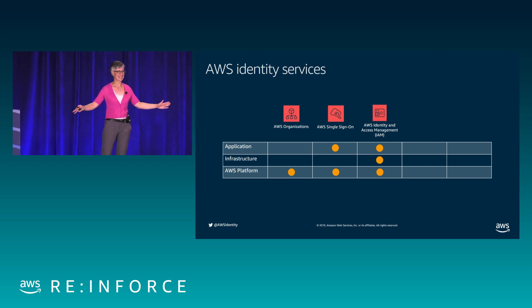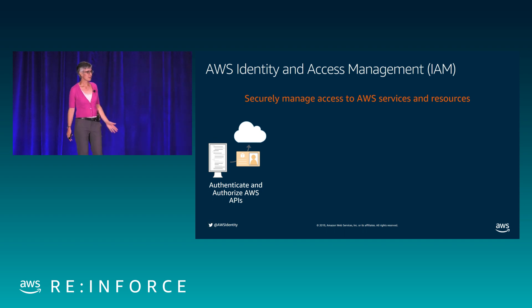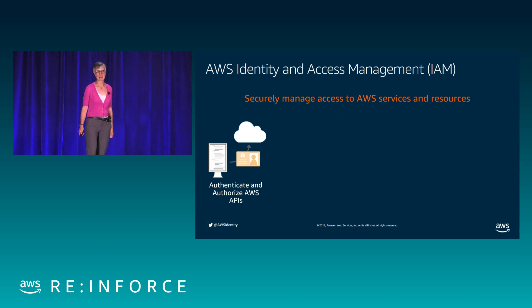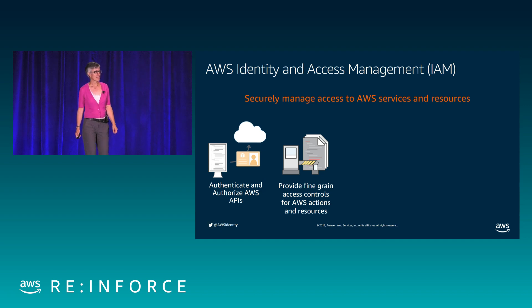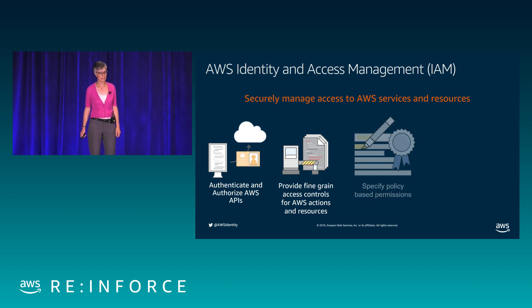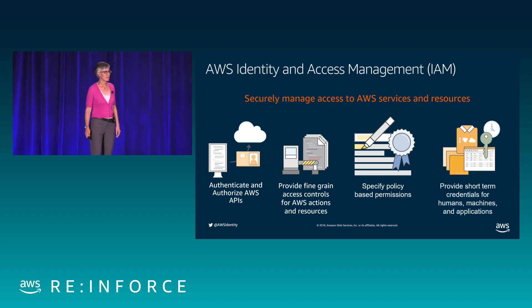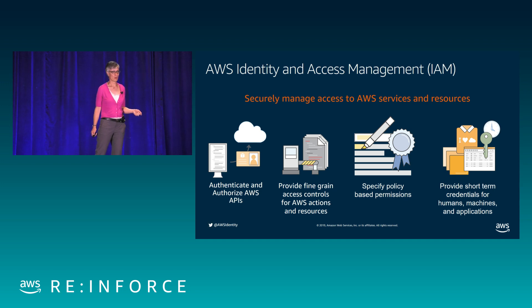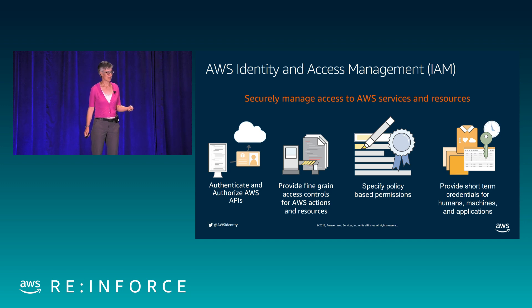Just yesterday, some of my colleagues demonstrated using AWS SSO to federate Google identities with a new proposed standard called Fast Fed, which is quite exciting. But at this precise moment, that's a demo stage, not a production stage. If you want to use a SAML-based identity provider, you should use the IAM method.